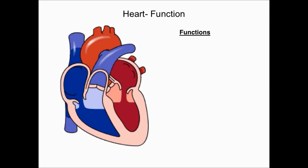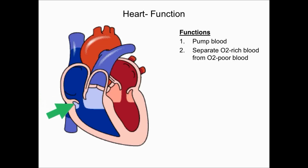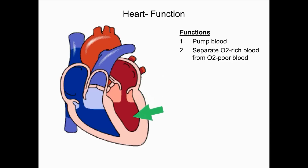The primary function of the heart is to pump blood and to separate oxygen-rich blood from oxygen-poor blood. Other functions include pumping oxygen-poor blood to the lungs and pumping oxygen-rich blood to the body's tissues. In this illustration, you can see that the right side of the heart is primarily responsible for pumping oxygen-poor blood, whereas the left side pumps oxygen-rich blood.